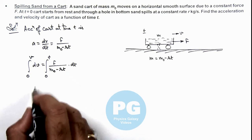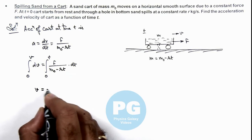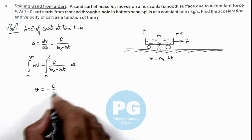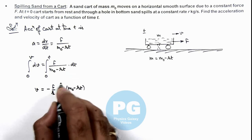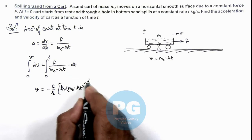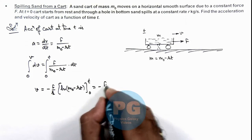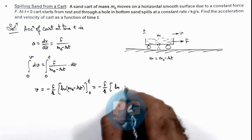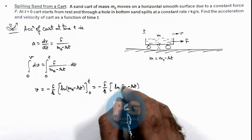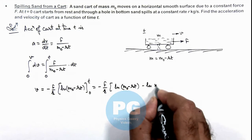So this gives v = -F/r × ln(m₀ - rt), on which we apply limits from zero to t. So this gives -F/r times [ln(m₀ - rt) - ln(m₀)].